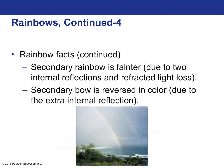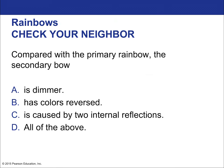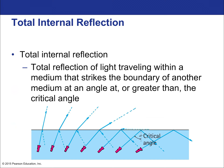Secondary rainbows are fainter and occur when light undergoes two internal reflections inside the water droplet instead of one. Some light is transmitted through the back of a primary droplet and reflects internally in a droplet behind it. The result is a second, dimmer rainbow with colors reversed compared to the primary rainbow.